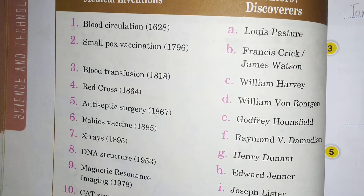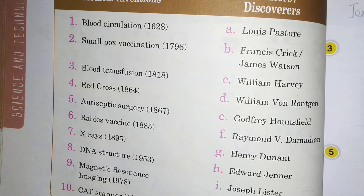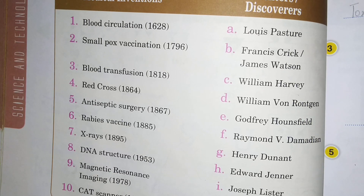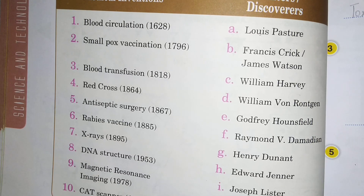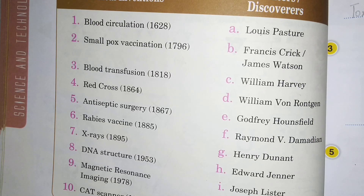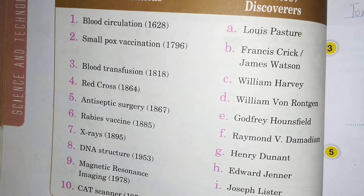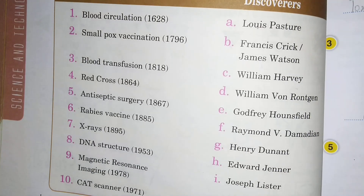Next is X-ray. Jab body ka koi bhi andar fracture ho jata hai, tab hum X-ray karvane chahte hai. Uski kis nai invent kya tha 1895 mein? That is option D, Wilhelm von Röntgen.